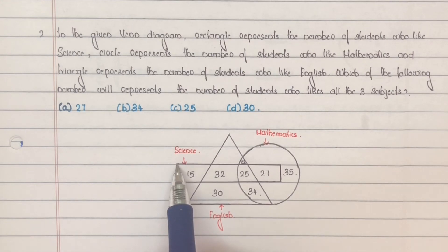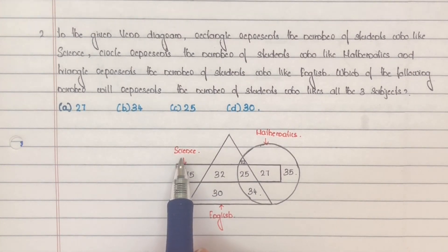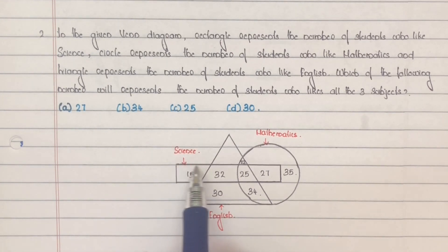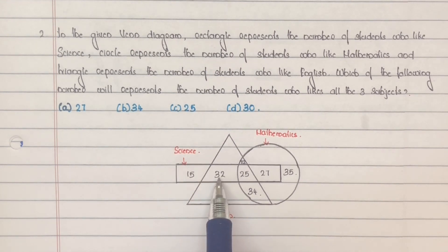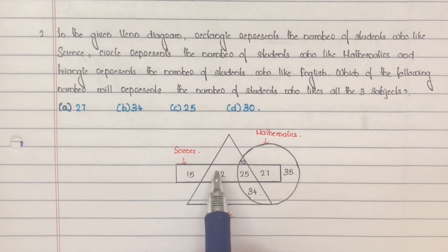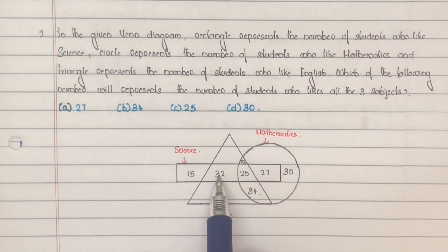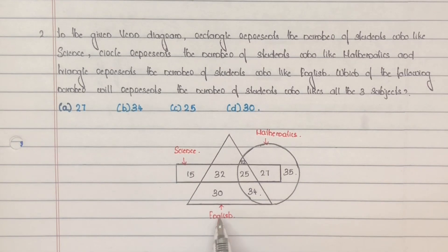Given that this rectangular portion represents students who like science: the number 15 is only within the rectangular portion, meaning 15 students like only science. The number 32 is a part of both the rectangle and the triangle, meaning 32 students like both science and English.